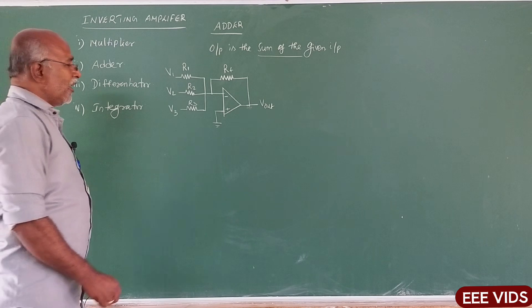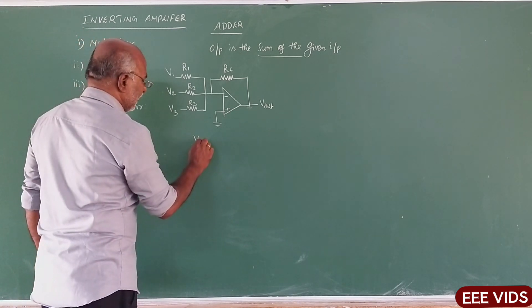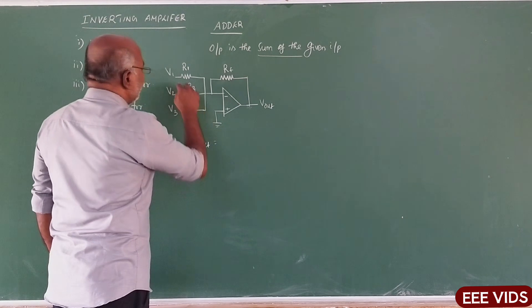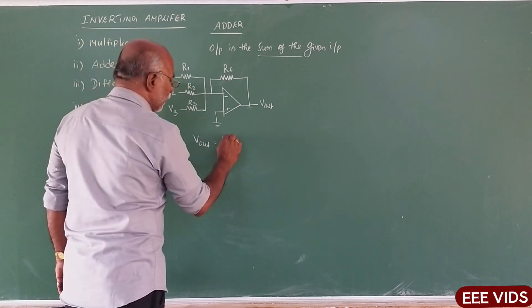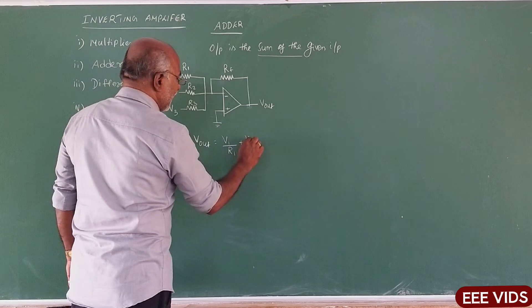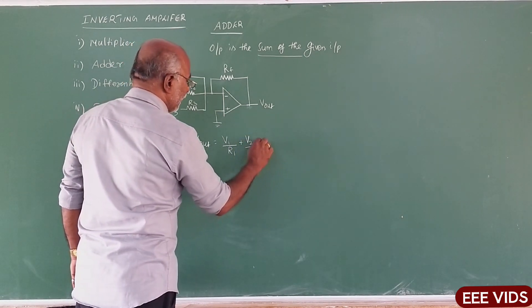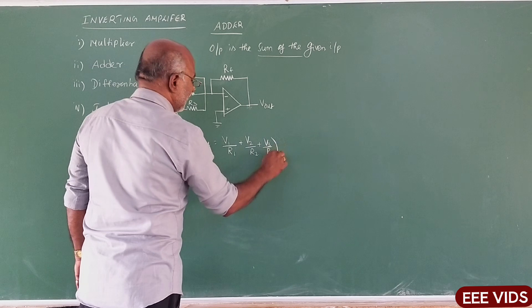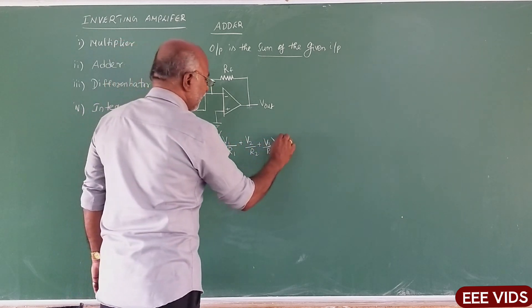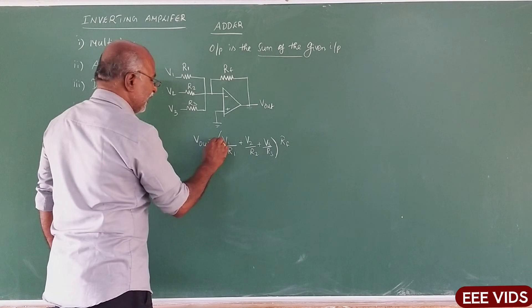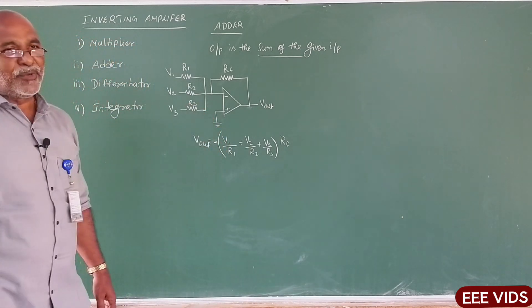So again, the formula: Vout is equal to, Vout is equal to, Vout is equal to, feedback resistance. V1 by R1 plus V2 by R2 plus V3 by R3 into Rf. Minus, minus, minus. Inverting Amplifier output is negative.